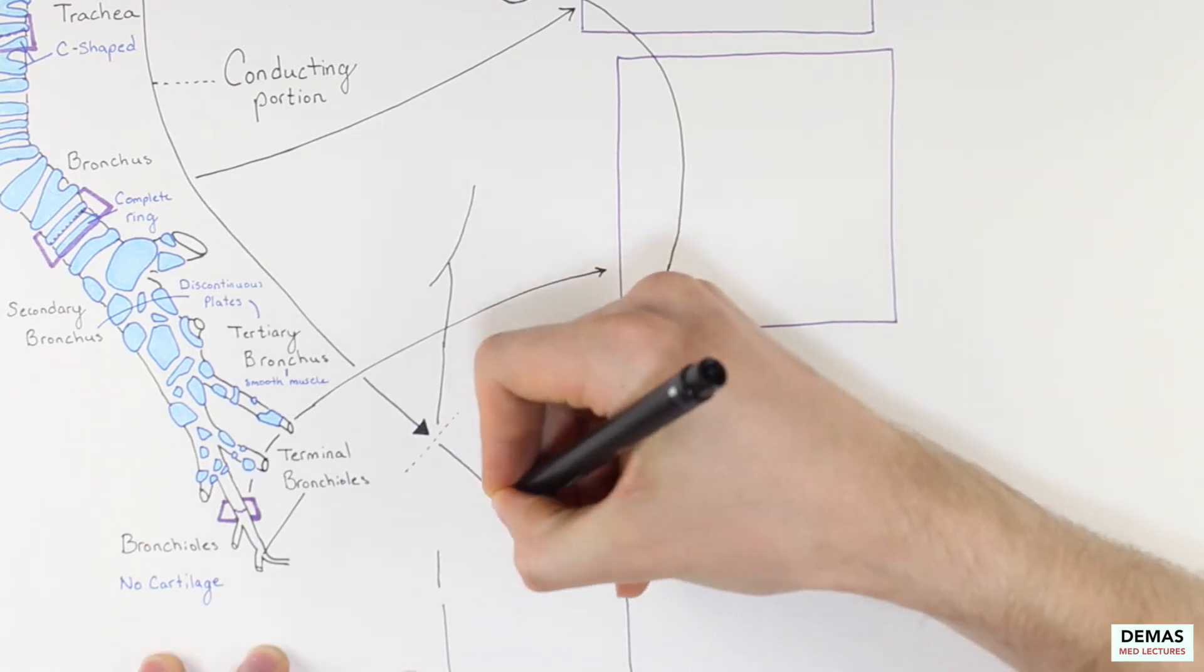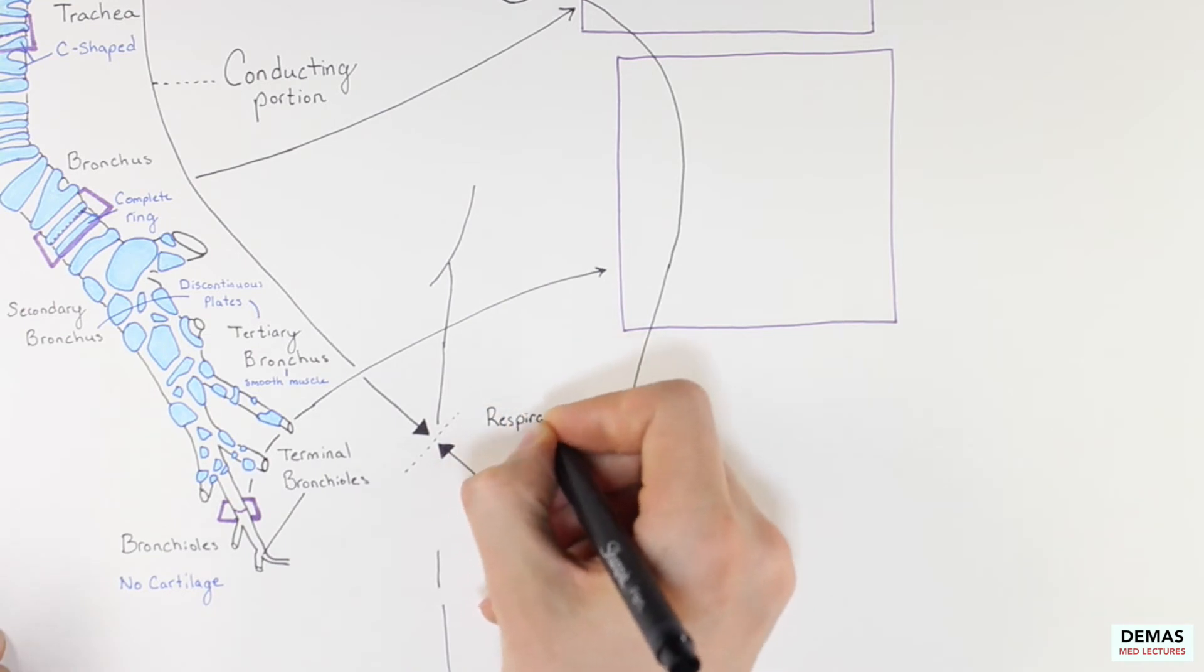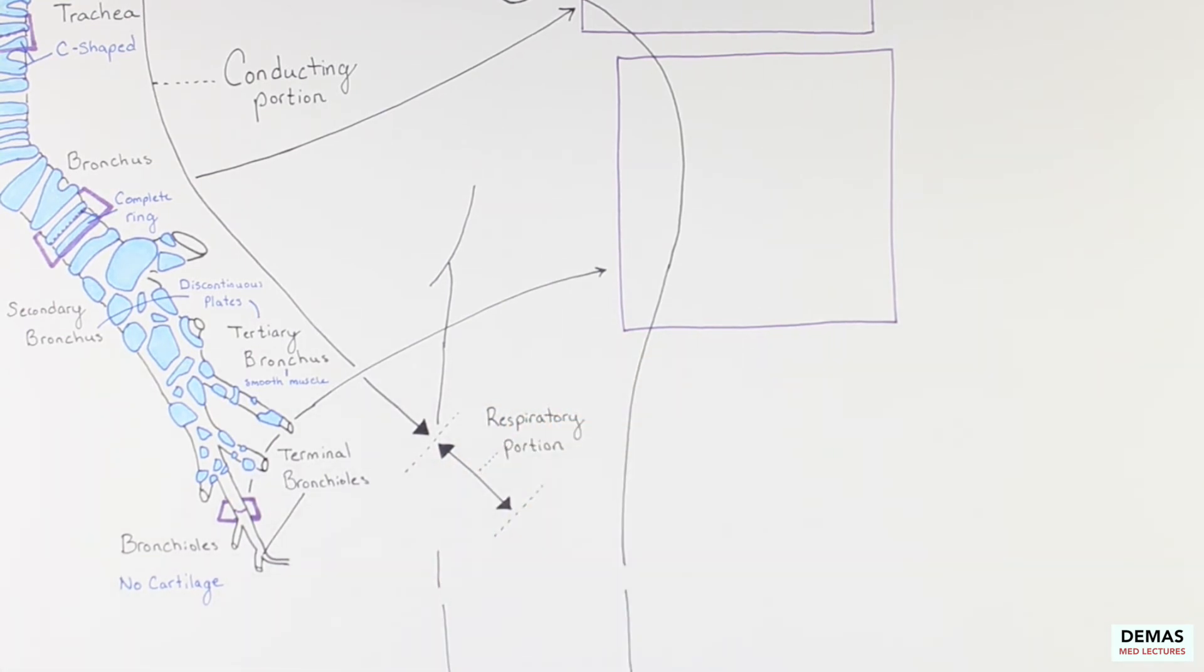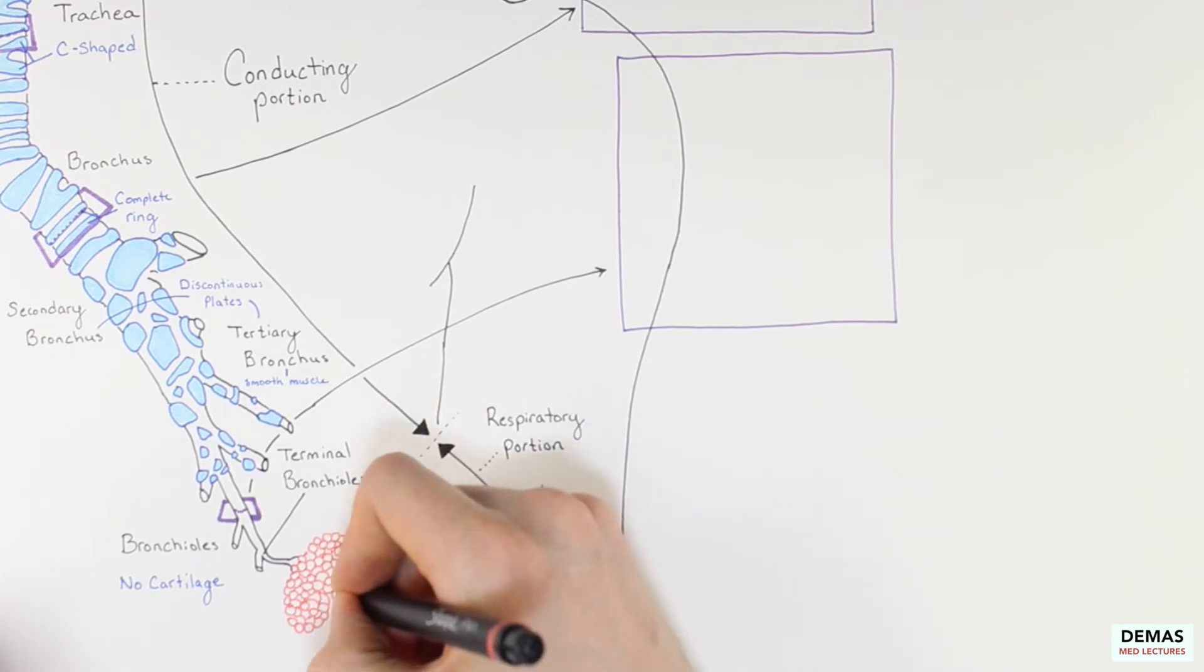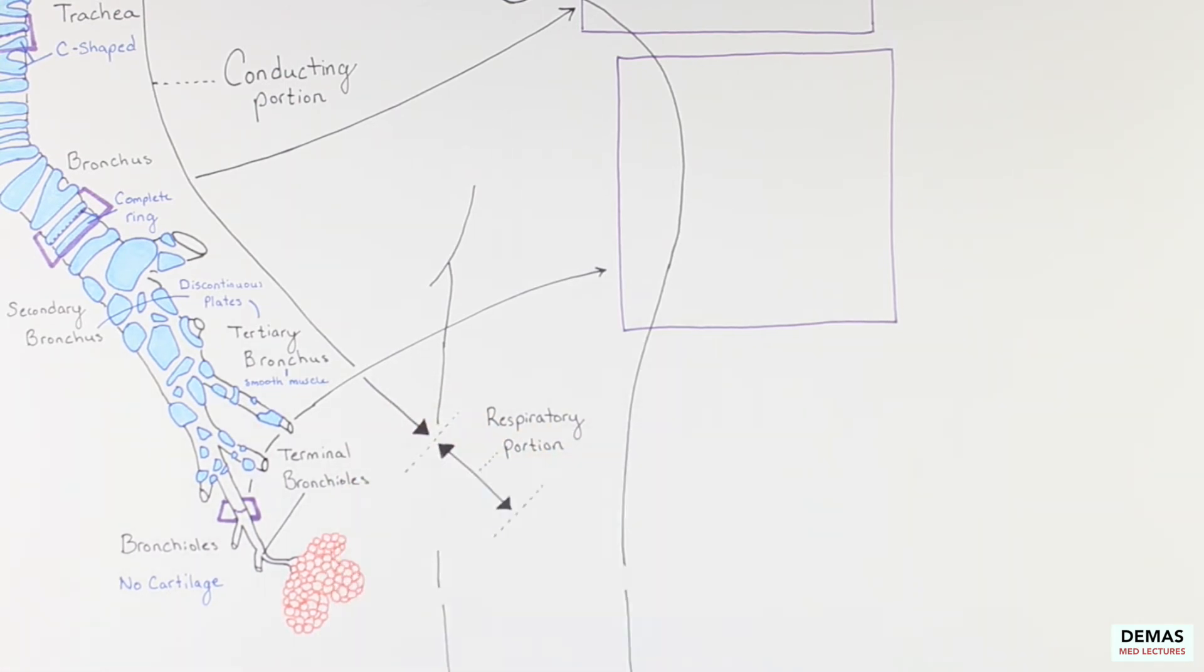Now we're going to move on to the respiratory division. The first part of the respiratory division is the respiratory bronchioles which is adequately named since it has respiratory in the name. The respiratory bronchioles are very similar in structure to the terminal bronchioles with a thick layer of smooth muscle. However the respiratory bronchioles are in close association with capillaries derived from the pulmonary arteries which enable gas exchange. They also contain outpouchings of alveoli which we will talk about next.